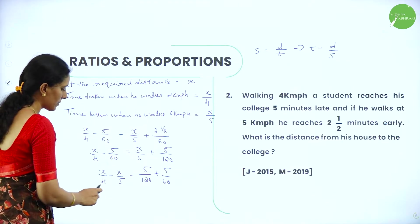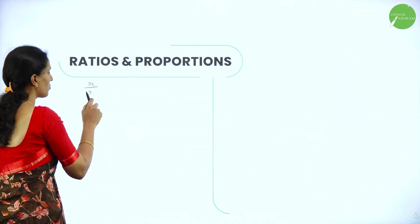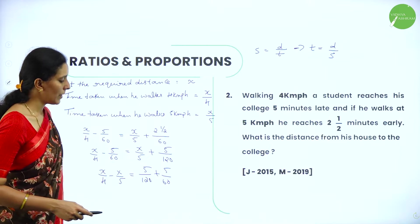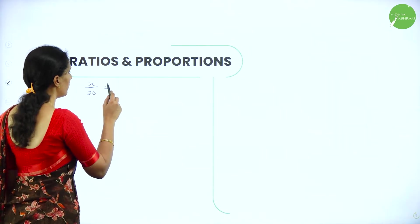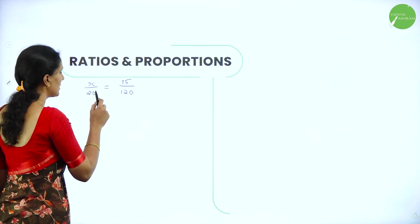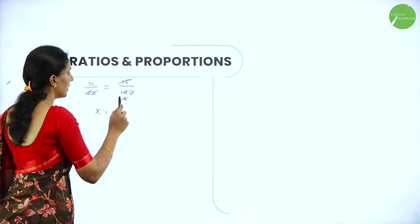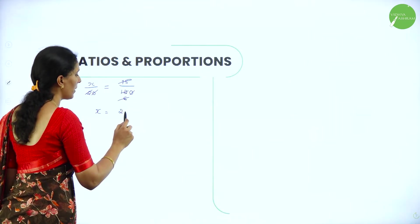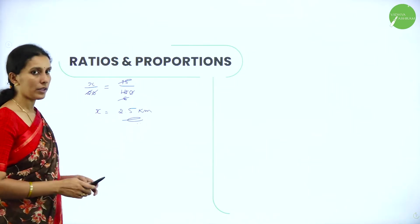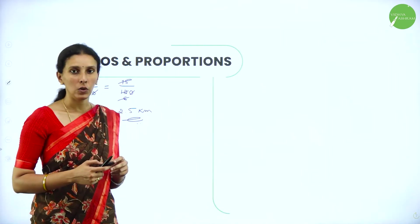Solving: x by 4 minus x by 5 gives 5x minus 4x over 20, which is x by 20. On the right side, 5 by 120 plus 5 by 60 simplifies — taking LCM as 120 and computing gives us the right-hand side equal to 15 by 120, which is 1 by 8. Solving x by 20 equals the right-hand side, we get x equal to 2.5 kilometers. So the distance between the college and the student's house is 2.5 kilometers.